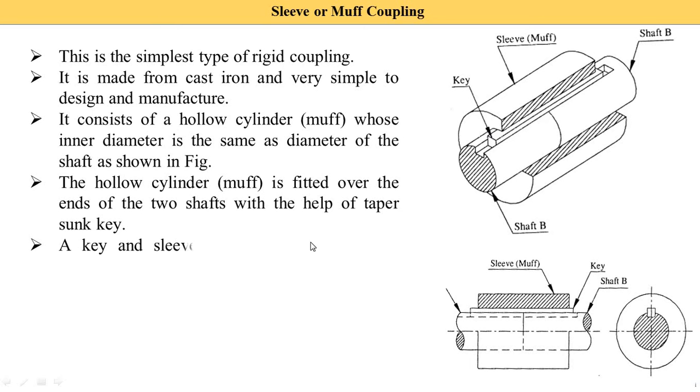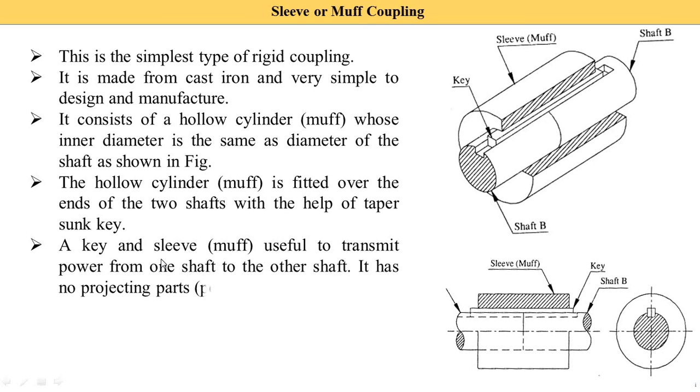The key and sleeve are useful to transmit power from one shaft to another shaft. It has no projecting parts, meaning a perfect smooth exterior. Power from shaft A is transmitted to the key, the key transmits to the sleeve, and then it is transmitted to shaft B.